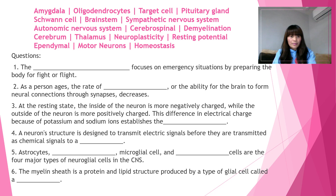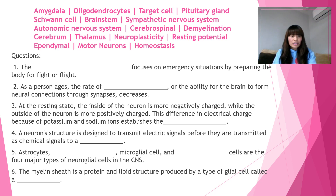For number two: as a person ages, the rate of blank — or the ability for the brain to form neural connections through synapses — decreases. The answer for number two is neuroplasticity. As a person ages, the rate of neuroplasticity or the ability for the brain to form neural connections through synapses decreases.